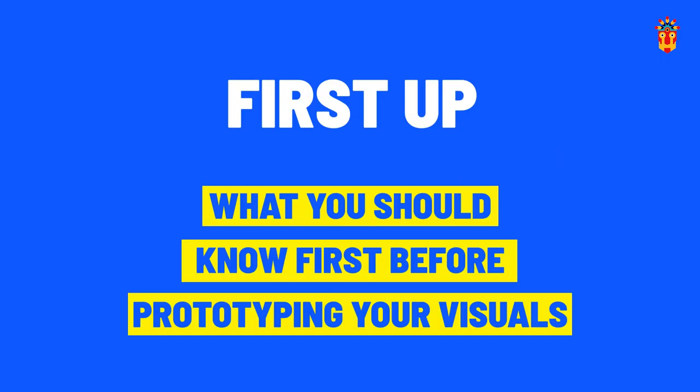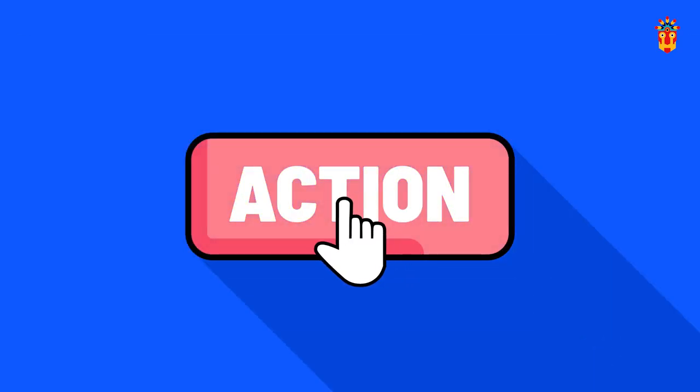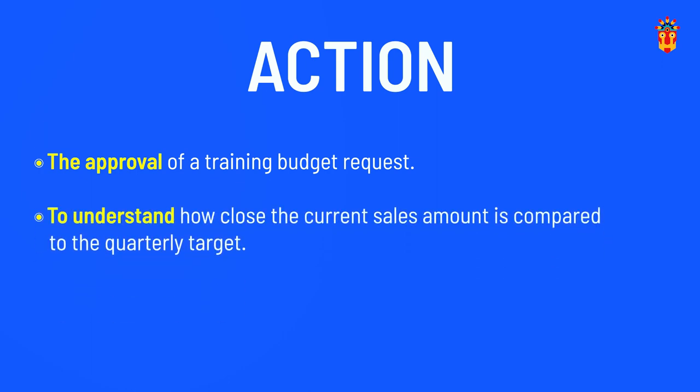What you should know first before start prototyping your visuals. You actually need to understand your audience — it's one of the principles of design thinking. We will then identify the action that you would like the audience to take after seeing your visual or watching your entire presentation. For example, this could be the approval of a training budget request, understanding how close the current sales amount is to a quarterly target, or choosing a new landing page to deploy based on the results of an A-B test.